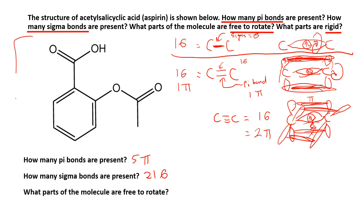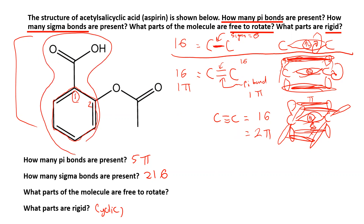When I'm looking at aspirin, what is rigid is a little bit easier to figure out. Cyclic structures are always rigid. So one part that is rigid is the cyclic aromatic structure. What else is rigid? Attached to carbon one is a carboxylic acid — this part of the molecule is referred to as benzoic acid. The carbon in that carboxylic acid has a double bond, so this part is also rigid. The carbonyl attached to carbon number one of the cyclic structure is rigid.